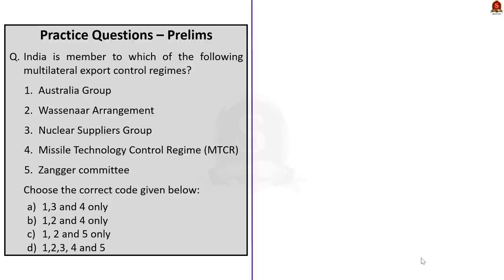The first question asks: India is a member to which of the following multilateral export control regimes? The options are: (1) Australia Group, (2) Wassenaar Arrangement, (3) Nuclear Suppliers Group, (4) Missile Technology Control Regime (MTCR), and (5) Zanger Committee. Five multilateral export control regimes are given and we have to find which ones India is a member of.